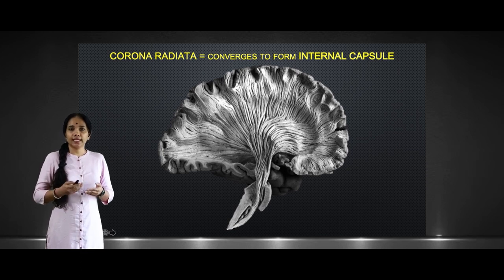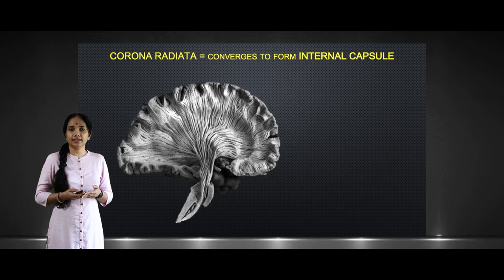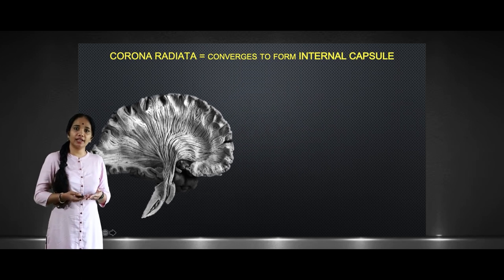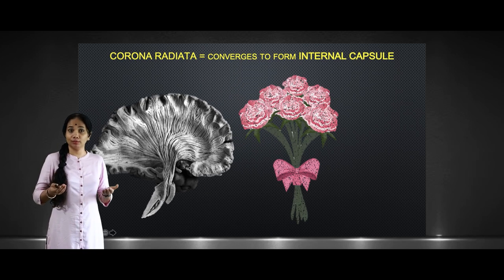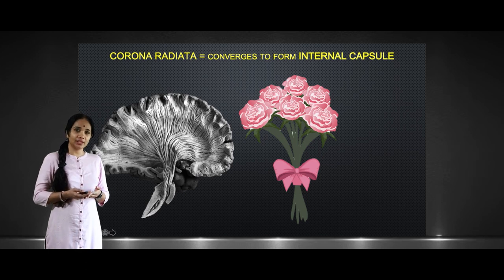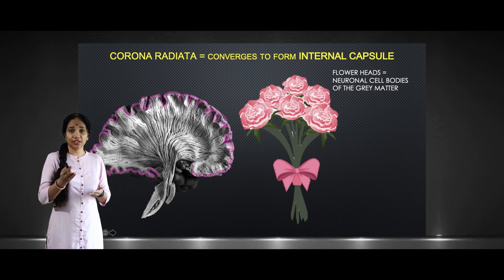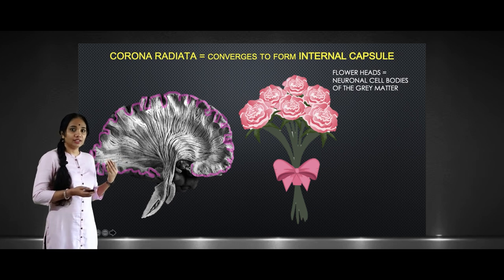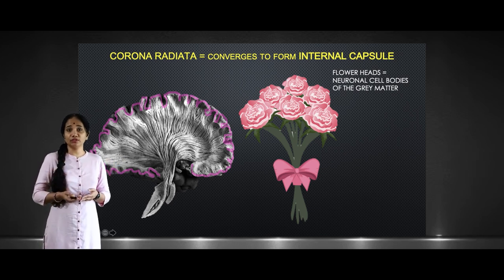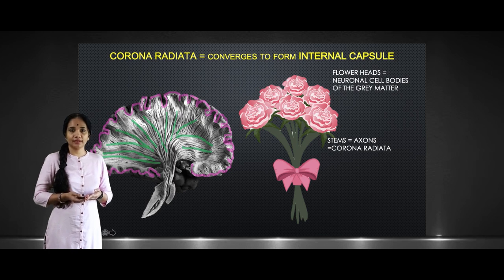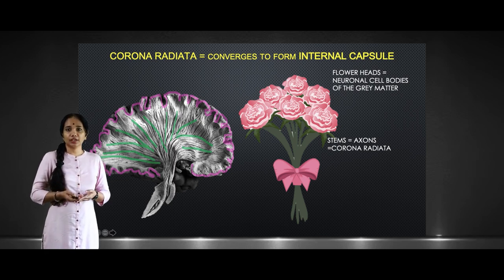Since this concept is slightly confusing to understand, I usually compare the corona radiata and the internal capsule to a bouquet of flowers. The heads of the flowers are the neuronal cell bodies, located in the gray matter, and the stems of the flowers are actually the corona radiata. Where you tie the bouquet — the bow — is what the internal capsule is.